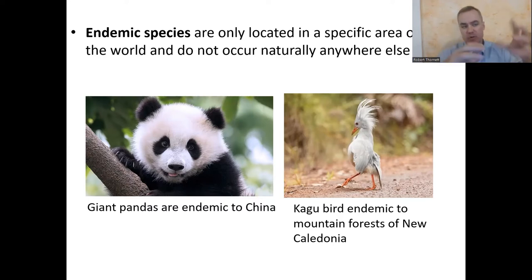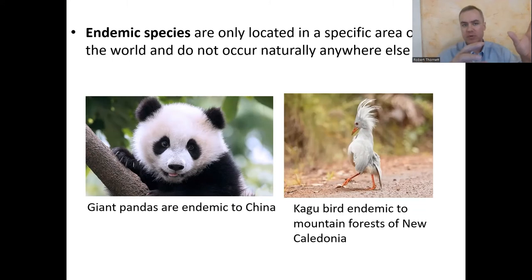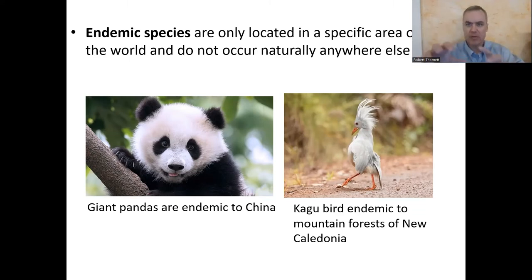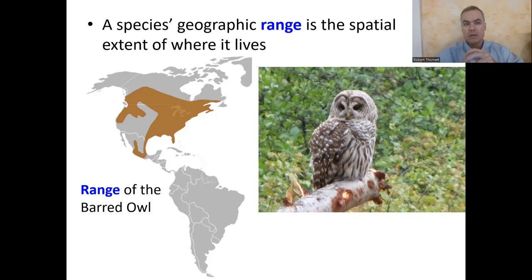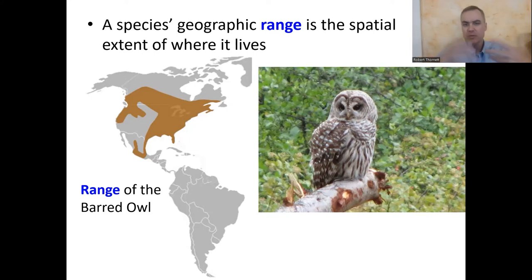So the two ends of the spectrum are cosmopolitan species found in many areas of the world versus endemic species located only in specific areas. A species' geographic range is the spatial extent of where it lives — how wide of an area, where's the territory where you can find this species.